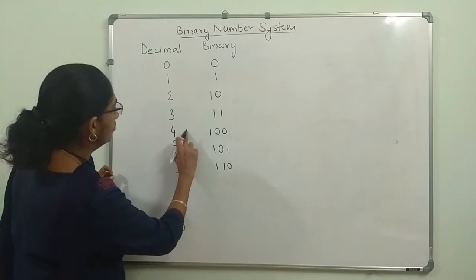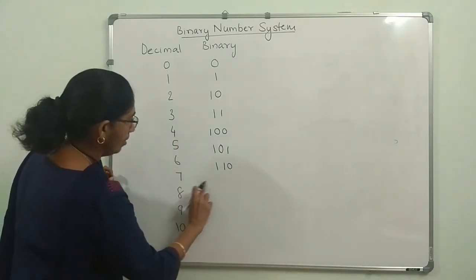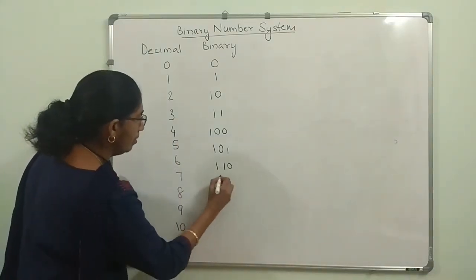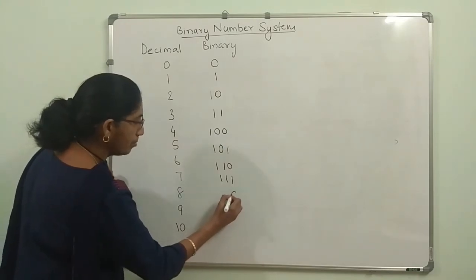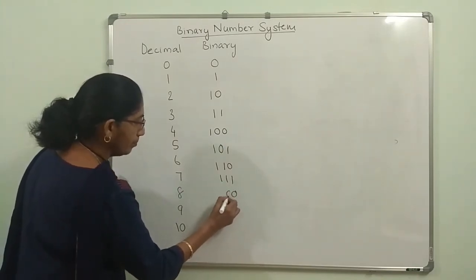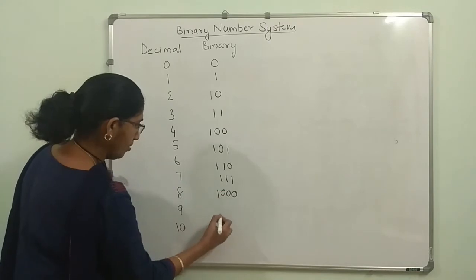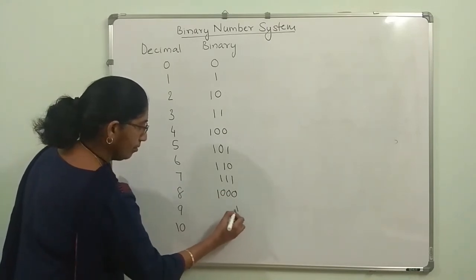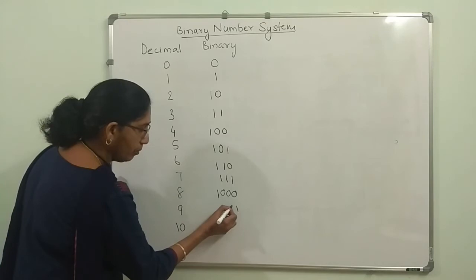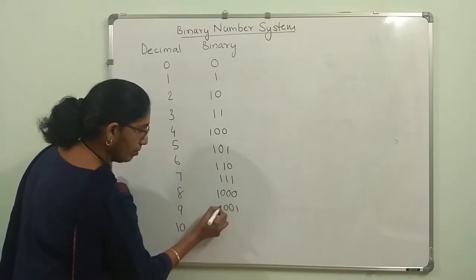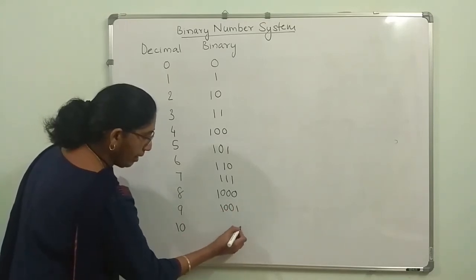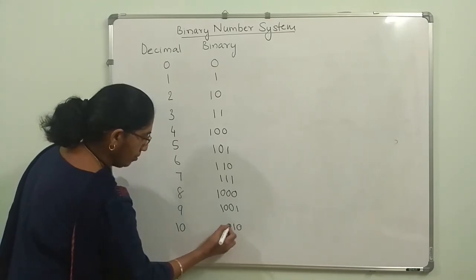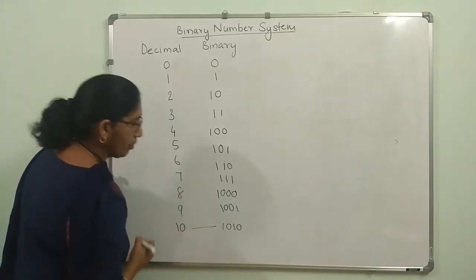Binary six is 110, binary seven is 111, binary eight is 1000, and for nine add one more. For ten, adding one more gives 0, 1, 0, 1 — so 1010 corresponds to decimal ten.